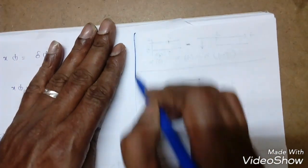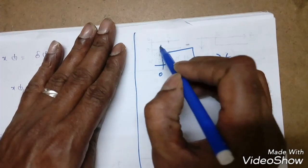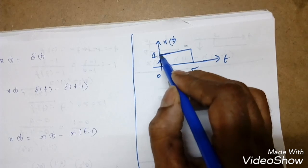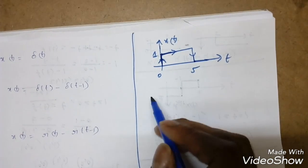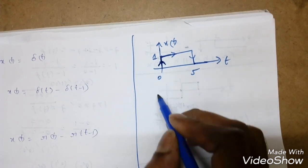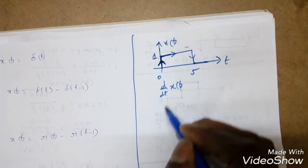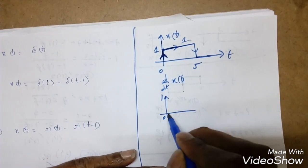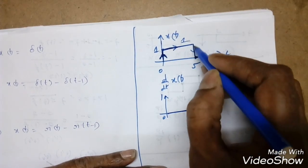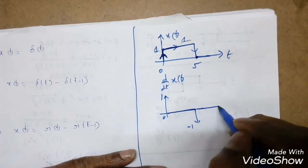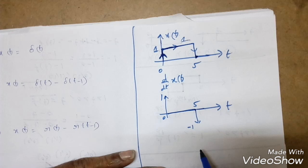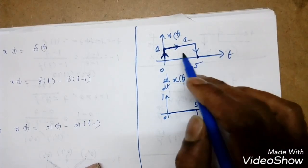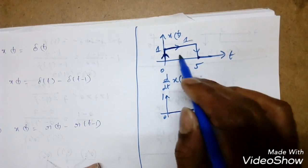So x(t) is a rectangular pulse of amplitude 1 from 0 to 5. To differentiate, wherever there is a discontinuity we get an impulse. At t=0 there is a jump from 0 to 1, giving an impulse of amplitude +1. The signal is constant between 0 and 5, giving 0. At t=5 there is a jump down, giving an impulse of amplitude -1.